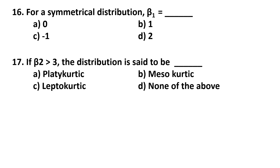Question number 17. If beta2 is greater than 3, the distribution is said to be: platykurtic, mesokurtic, or leptokurtic.